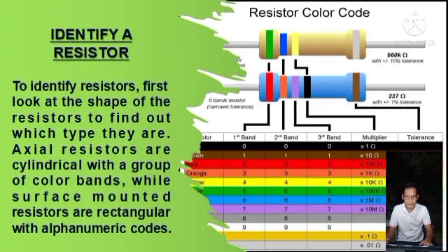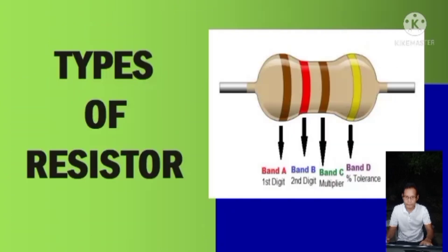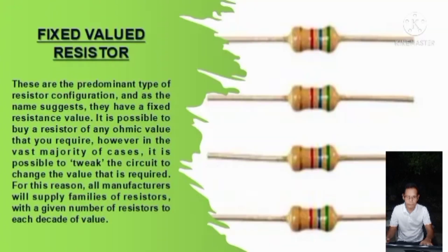Resistor color codes are used to identify resistor values. There are different types of resistors. Fixed value resistors are the predominant type of resistor configuration, and as the name suggests, they have a fixed resistance value.